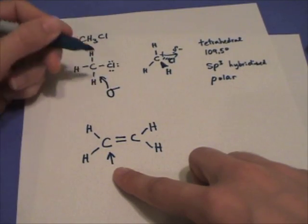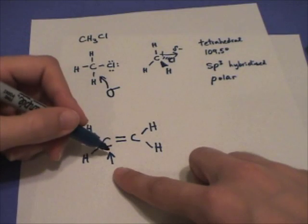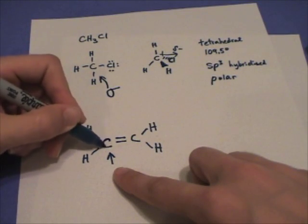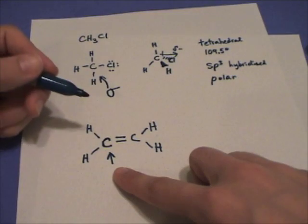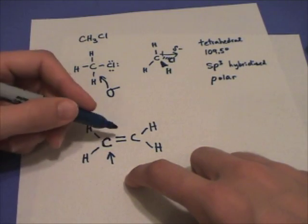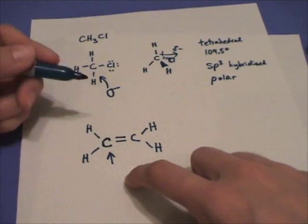So remember sigma bonds are single bonds. So this, okay, central carbon has one, two, three sigma bonds and one pi bond. So a double bond remembers a sigma and a pi bond.